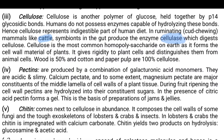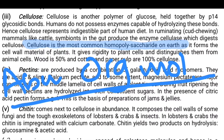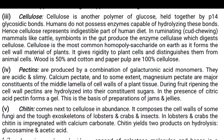Cellulose gives rigidity to the plant cell and distinguishes it from the animal cell. Wood is approximately 50% cellulose, whereas cotton and paper pulp are 100% cellulose. Cellulose is the most abundant organic molecule on the planet Earth.